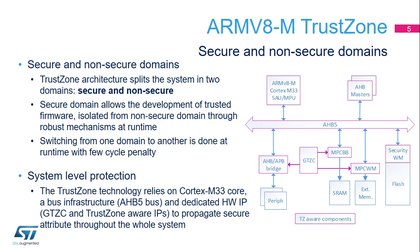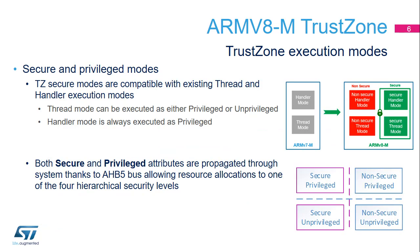TrustZone is a system-level protection, relying on the Cortex-M33 core, AHB5 bus architecture, and some dedicated hardware blocks. TrustZone technology is compatible with Thread and Handler execution modes. In ARM V6 and ARM V7, two execution modes were supported. In ARM V8M, four execution modes are now available.